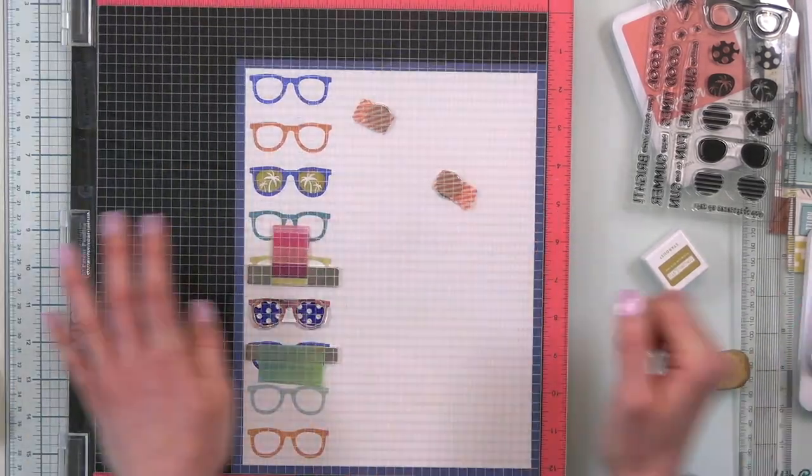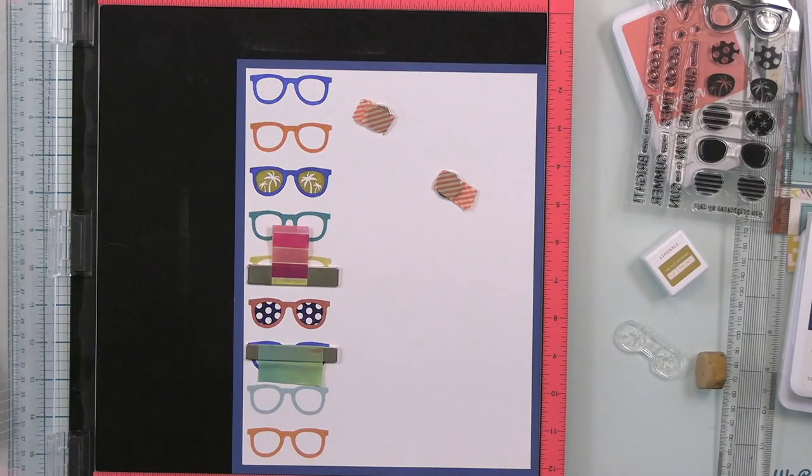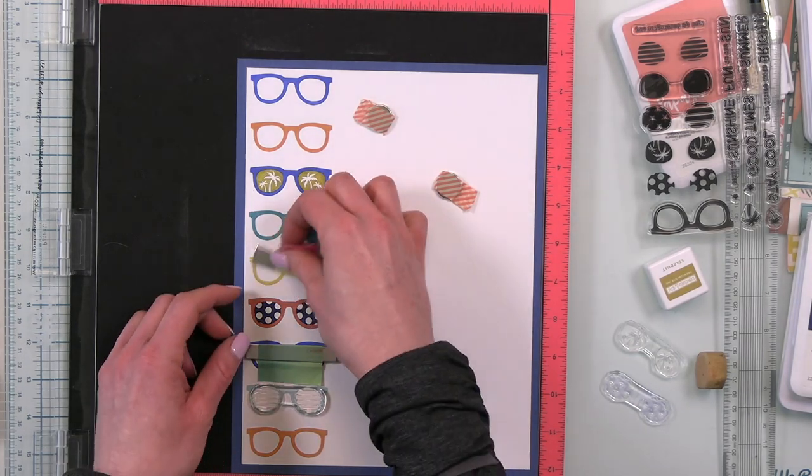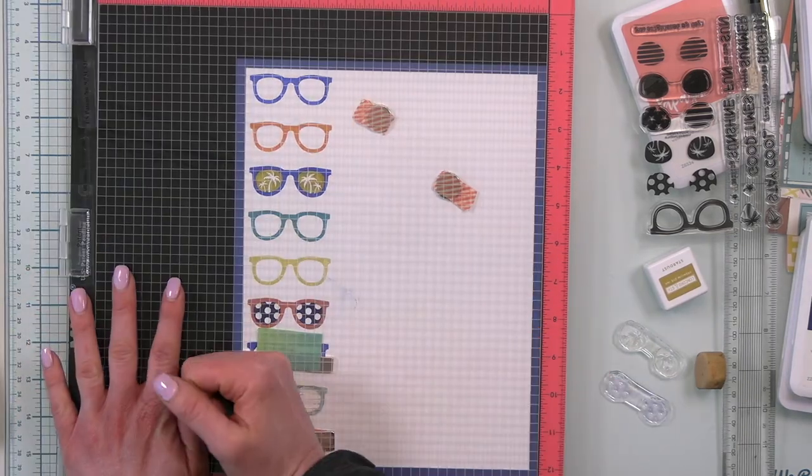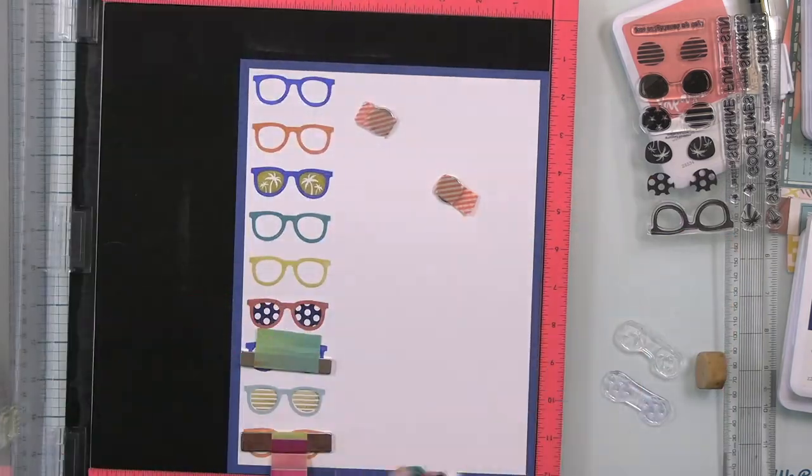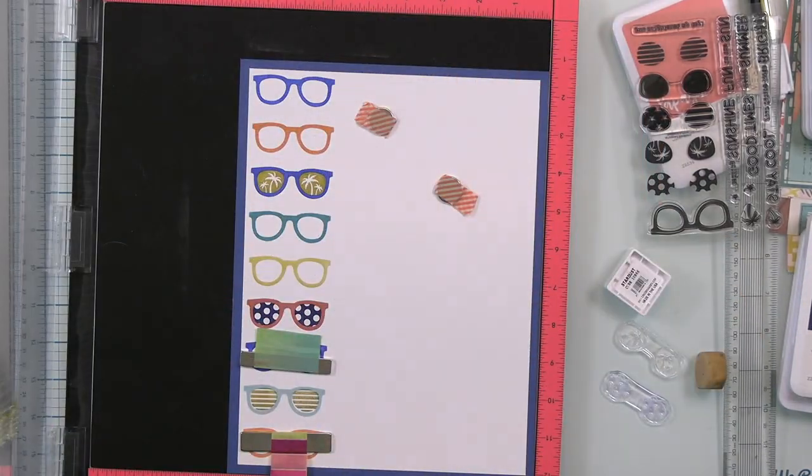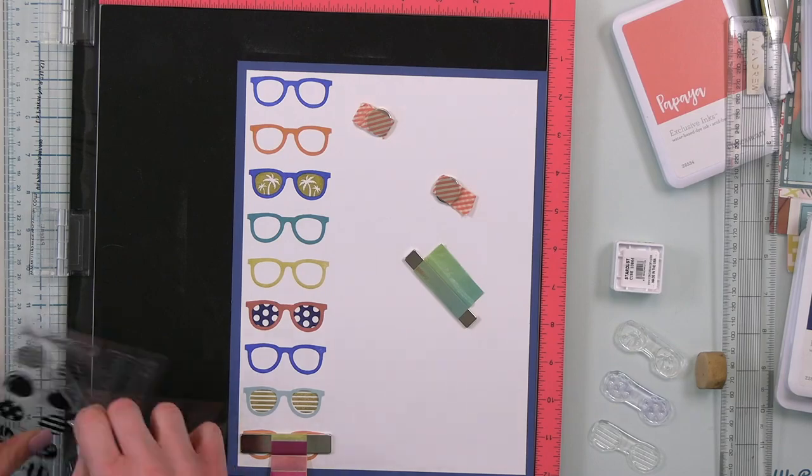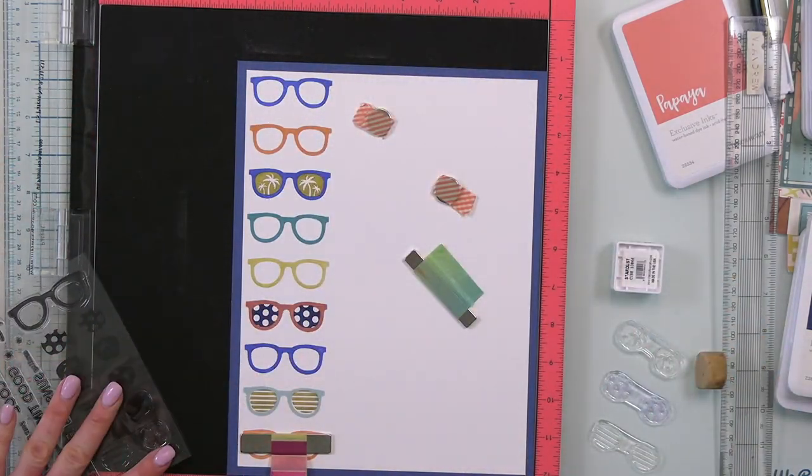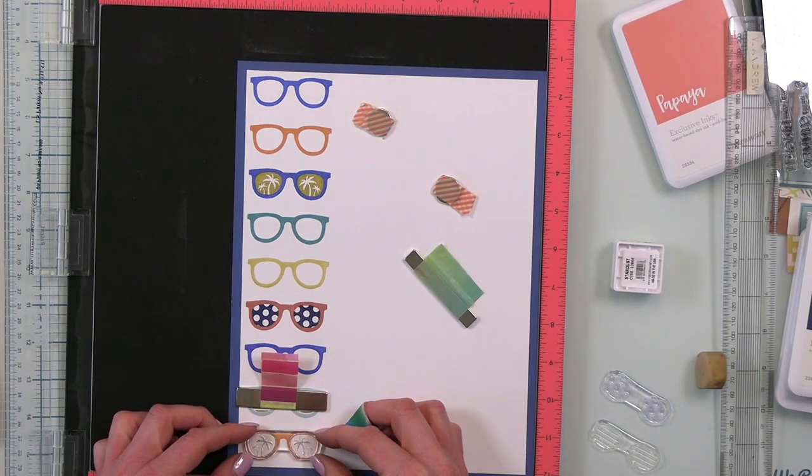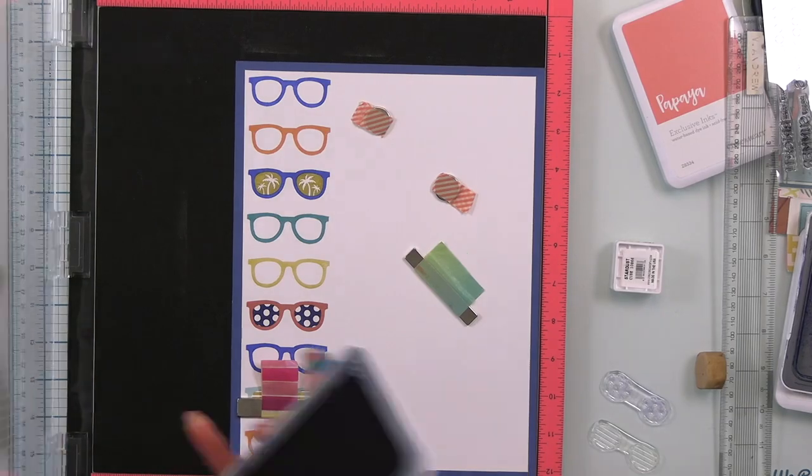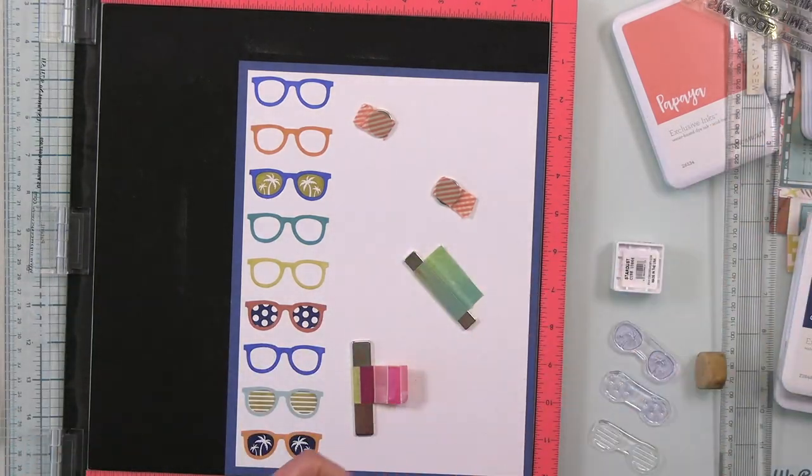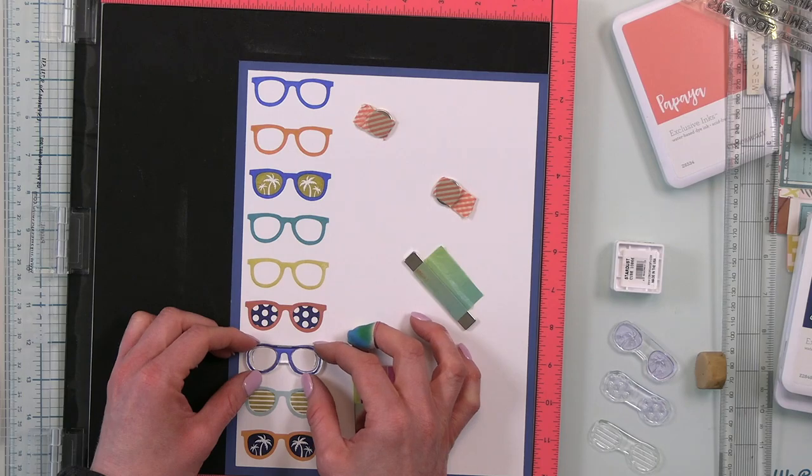You can use so many different color combinations to really make these super cool. You guys, this is definitely a set that would lend itself to a lot of creative creativity. And if you look at the set, the sentiments on it are great for card making or scrapbooking. You have stay cool, good times, happy summer, sending sunshine, fun in the sun, your future looks bright. And then you have one that's great for cards. You brighten my day. So really, really fun set here. I highly recommend you checking that out in the tailored expressions shop. It is called shades of summer.